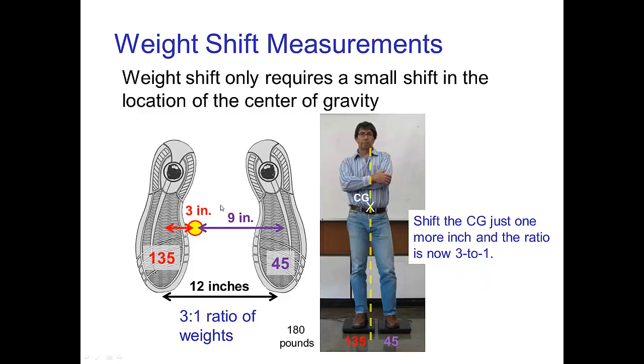And here I've shifted it just one more inch, and so now the center of gravity is such that the center of pressure is three inches from one foot and nine inches from the other foot. In this case the ratio of weight is three to one, so three times as much weight on one foot than the other. And you see here how that is affecting my pose.